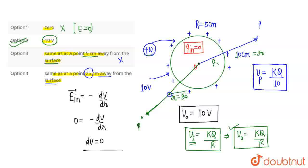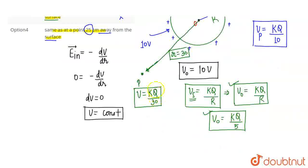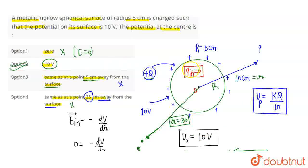For a point 25 cm away from the surface, the total distance from the center is 5 + 25 = 30 cm. The potential at this point V = KQ/30, which is again not equal to the center potential KQ/5. So always remember: for a hollow spherical surface, the potential at the center equals the potential at the surface. The surface potential was given as 10 volts, so the center potential is also 10 volts. This is the answer.